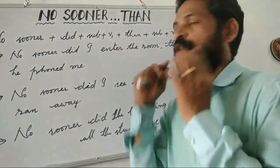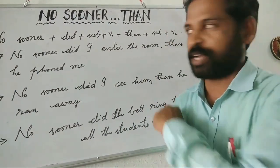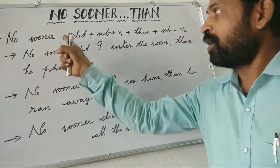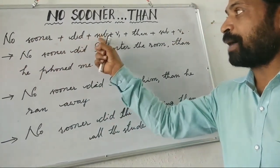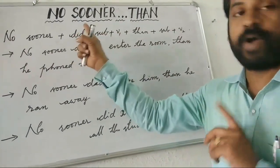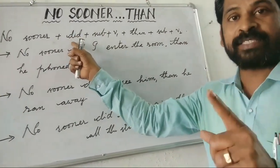Let us see the structure. No sooner, plus did, plus subject, plus V1. We have already learnt 'did' — it is past tense.